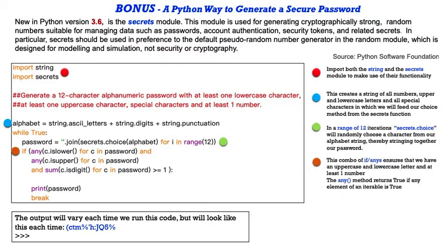And as promised, here is our bonus feature. I always like to give you a little bit of something extra during these. This really is an advanced concept, and we'll go more into these different modules later on in the course. But here is a way, a Python way, to generate a secure password. There's something known as the secrets module. This is new as of Python version 3.6. This module is used for generating cryptographically strong random numbers suitable for managing data such as passwords, account authentication, security tokens, and related secrets. In particular, secrets should be used in preference to the default pseudo-random number generated in the random module, which is designed just for modeling and simulation, not for security and cryptography. So this is what you'd want to do if you have call to generate something that is security-based.